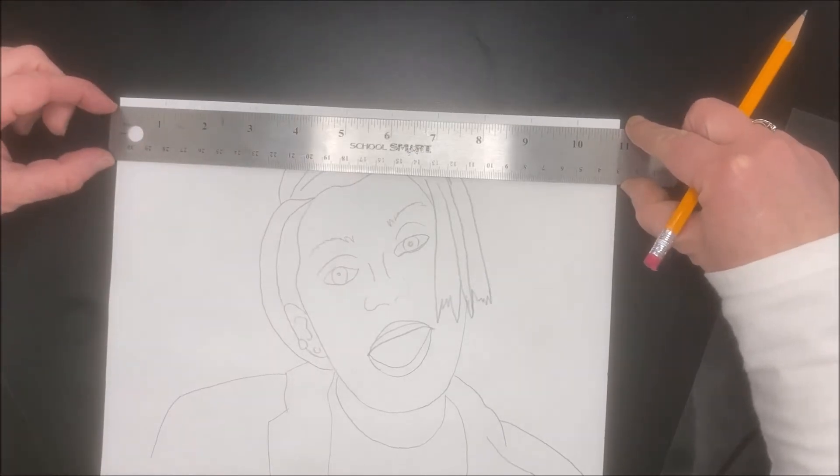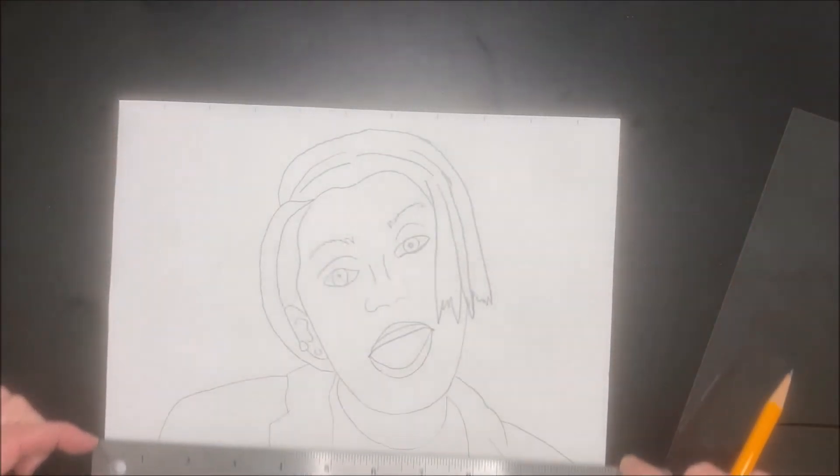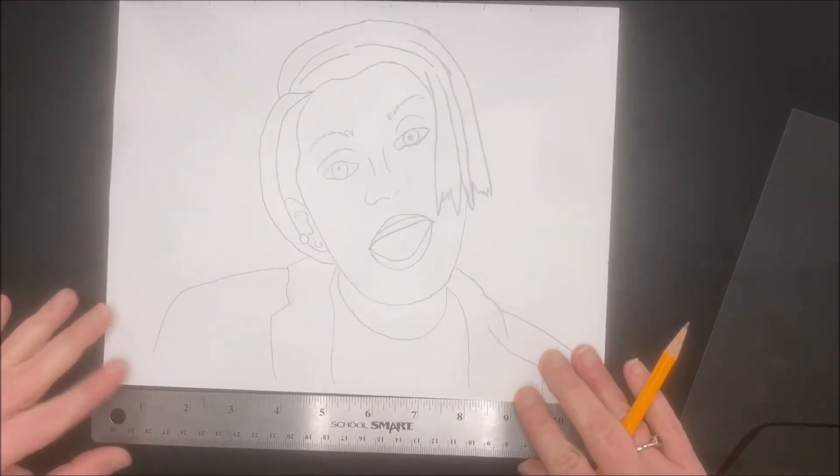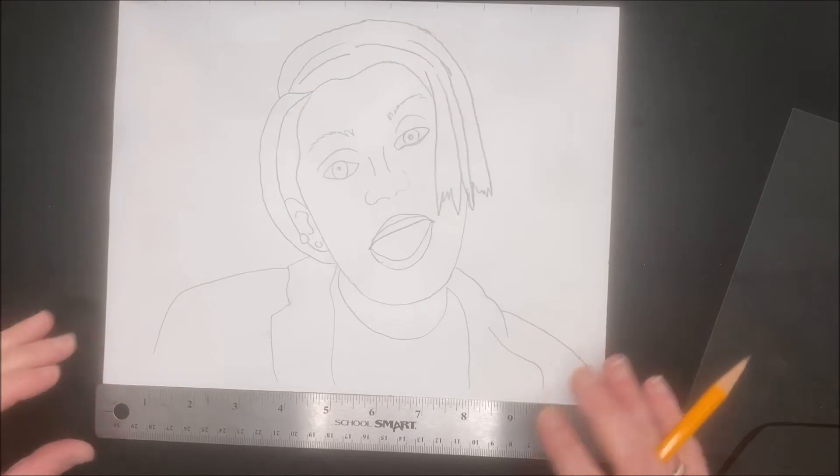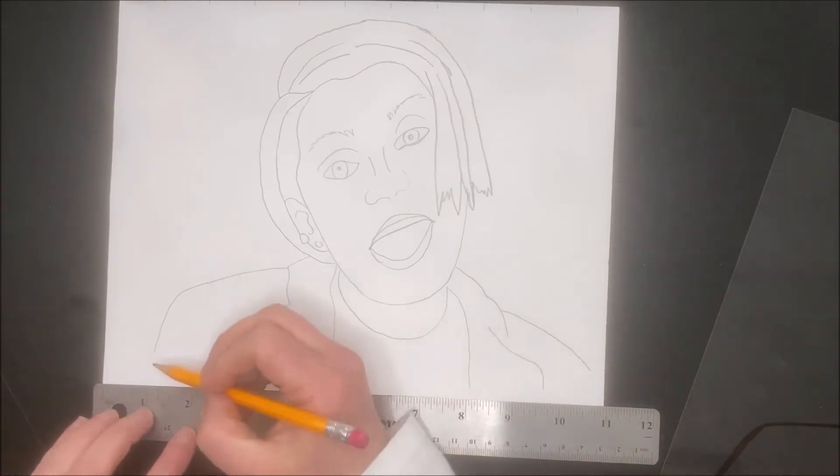And then what I'm going to do is I'm not going to turn my paper around, I'm not going to flip anything. I'm going to actually move my ruler all the way down to the bottom. Move it all the way down to the bottom, again making sure I keep it even here, and I'm going to go every inch and make a little line.